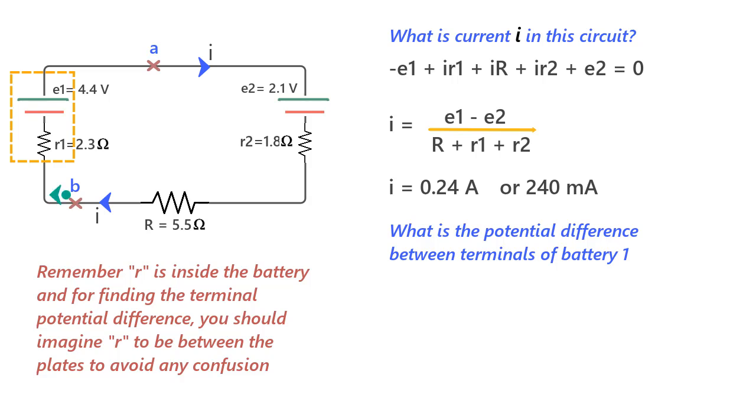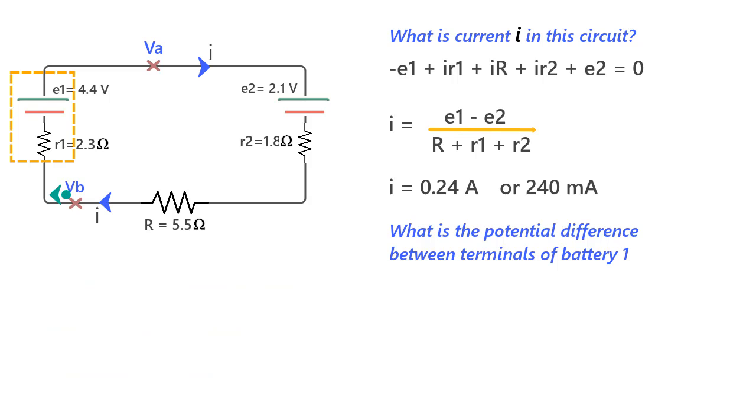Then what we can do is start at point B, that is effectively the negative terminal of the battery, and say the potential here is VB, and add the drops and gains till we reach point A where we say the potential is VA, and we do so moving in clockwise direction. So what is important for you to note is that we do not wish to find VA or VB, but the difference between VA and VB, that would also be the terminal potential difference for battery one.